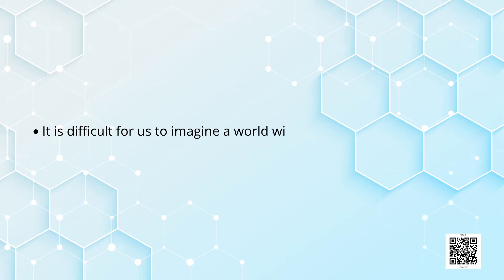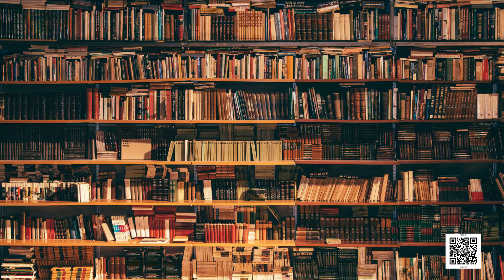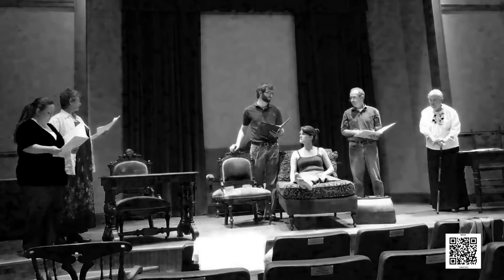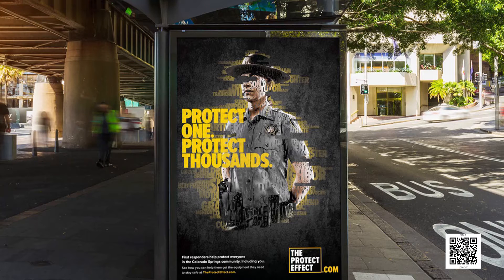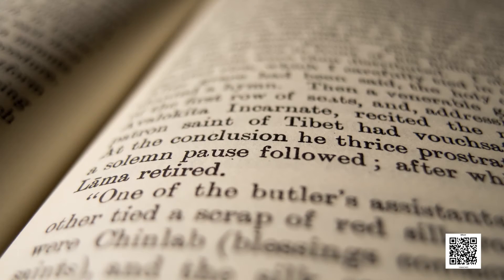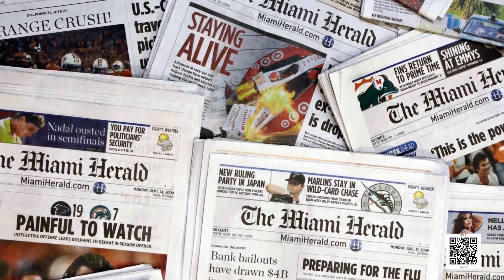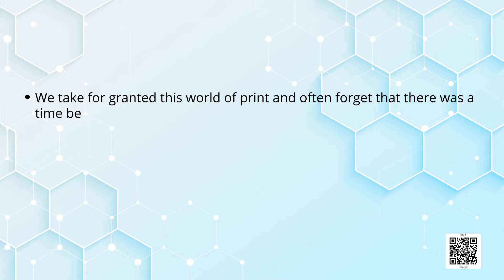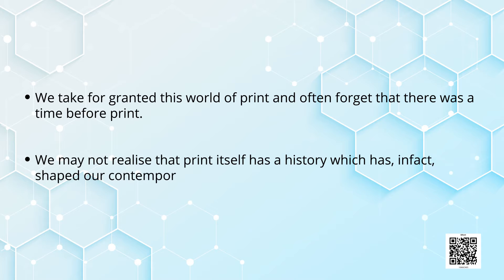It is actually difficult for us to imagine a world without printed matter. We find evidence of print everywhere — in books, journals, newspapers, prints of famous paintings, and also in everyday things like theatre programs, official circulars, calendars, diaries, advertisements, and cinema posters at street corners. We read printed literature, see printed images, follow news through newspapers and track public debates in print. We take for granted the world of print and often forget there was a time before print, and may not realize that print itself has a history which has shaped our contemporary world.